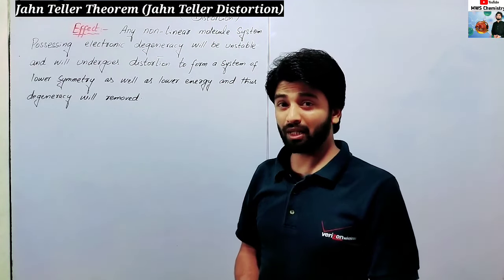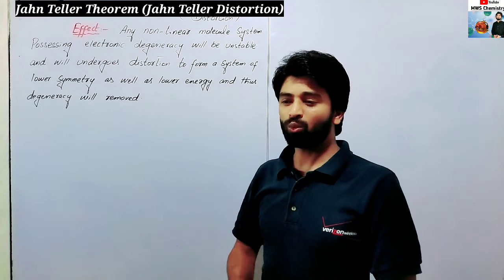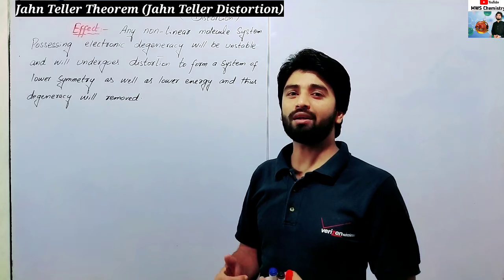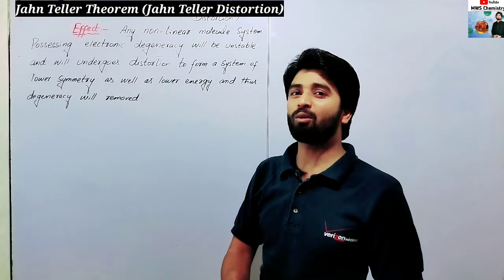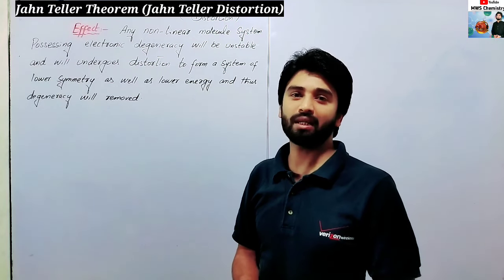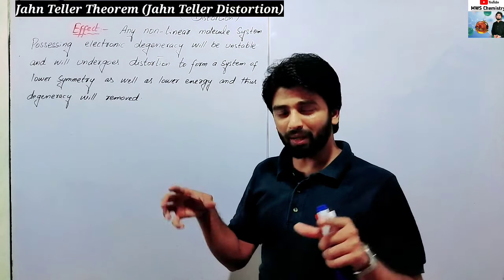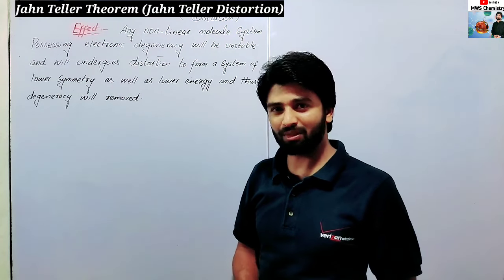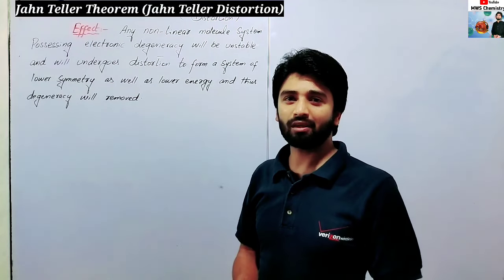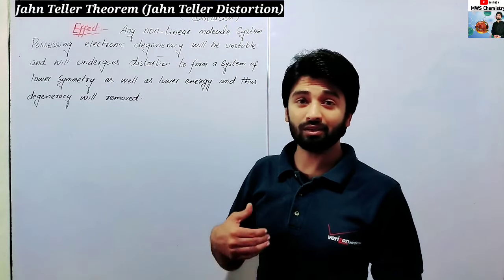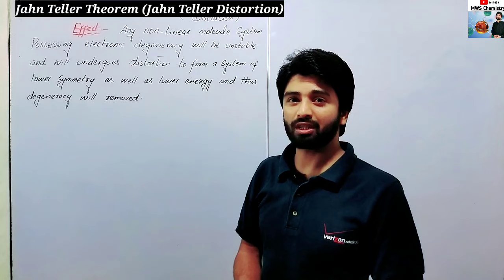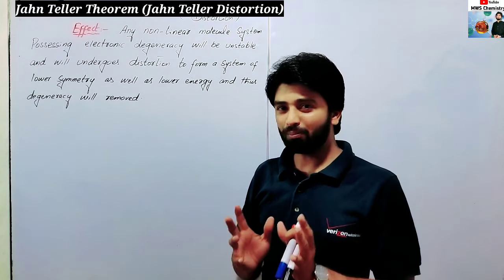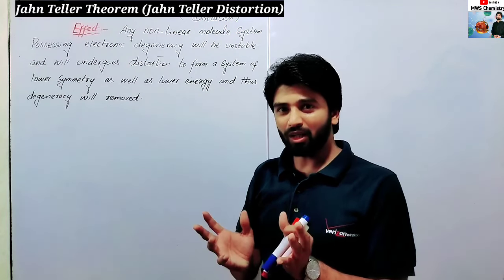This principle, this theorem, applies to the stability of coordination compounds, and especially here we have coordination number 6 in octahedral complexes. When we approach the ligands, and the repulsion among the ligands is more, we get distortion.